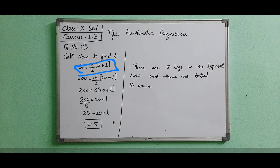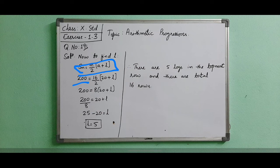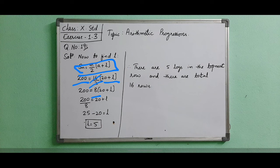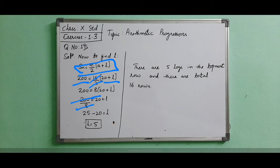Sn equals n by 2 times a plus l. Here the sum is given as 200. n is 16. 16 by 2. a is 20. 2 and 8 get cancelled, so it is becoming 8. Now 8 is in multiplication. When we shift it comes to division. 8 ones are 8, 8 twos are 16, 4 will remain, 8 fives are 40. So you are getting here as 25.